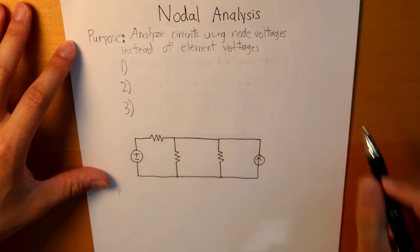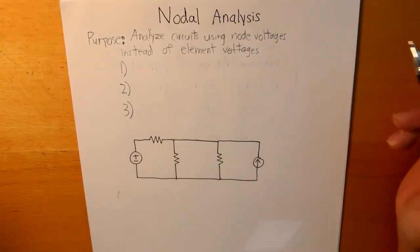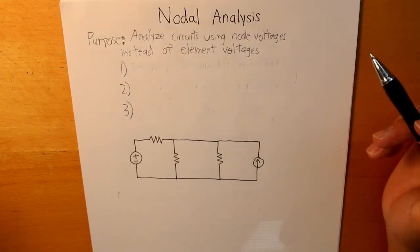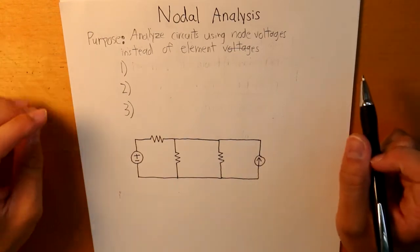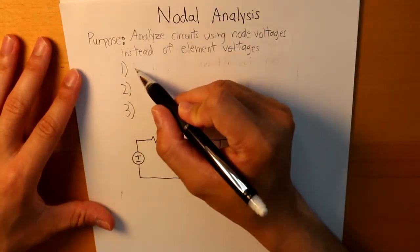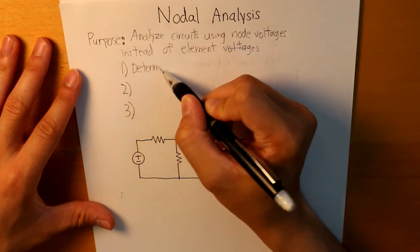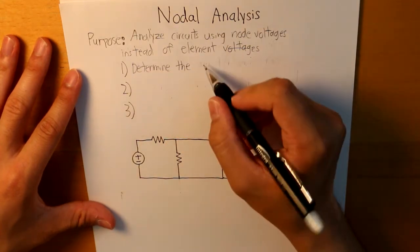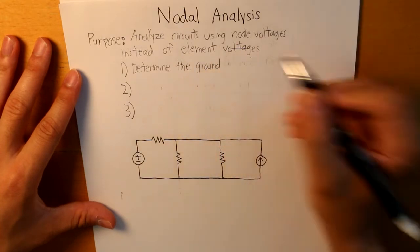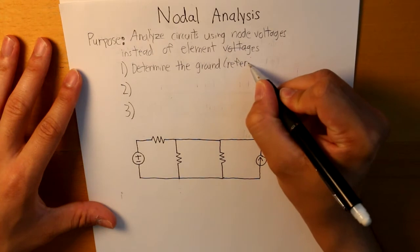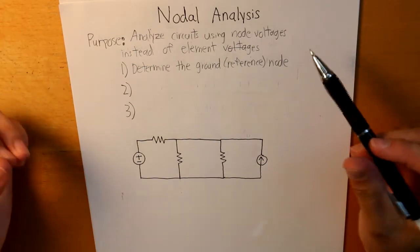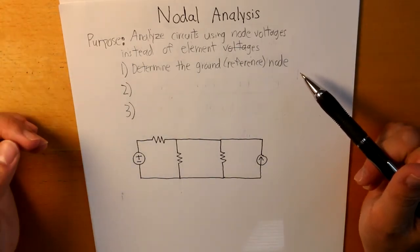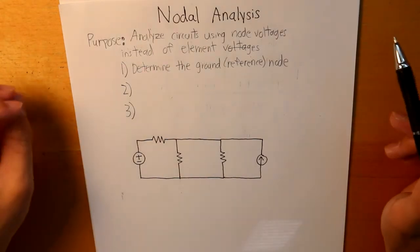And this method is particularly used in circuits where it's a little bit too complicated to solve for unknown elements when we use KCL or KVL. So nodal analysis is like a three-step process and the first step is to first determine the ground or reference node and that's usually located in the lowest location at which the potential is placed.